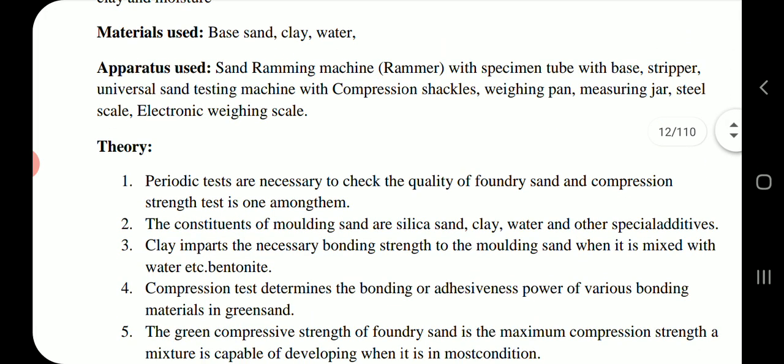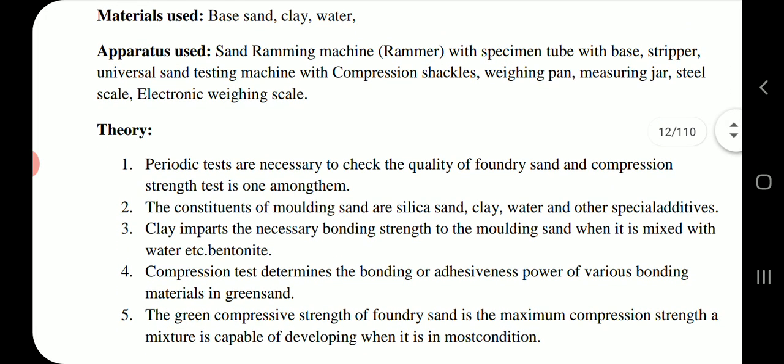Theory: Periodic tests are necessary to check the quality of foundry sand, and compression strength test is one among them. The constituents of molding sand are silica sand, clay, water, and other special additives. Clay imparts the necessary bonding strength to the molding sand when it is mixed with water — for example, Bentonite. Compression test determines the bonding or adhesiveness power of various bonding materials in green sand.